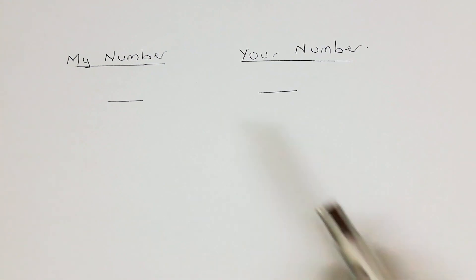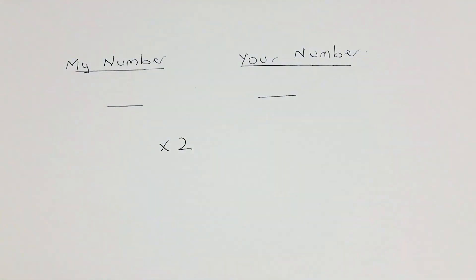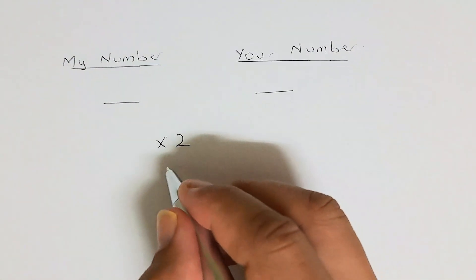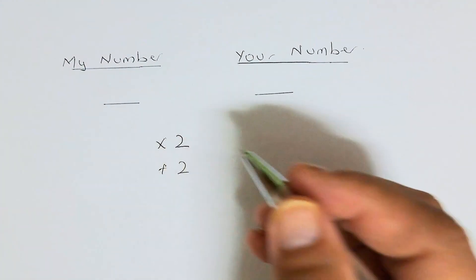Step 1, choose your number and multiply your number by 2. Next step, you are going to add 2 to the result.